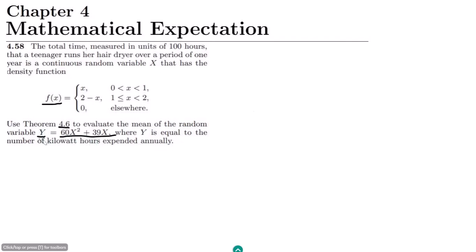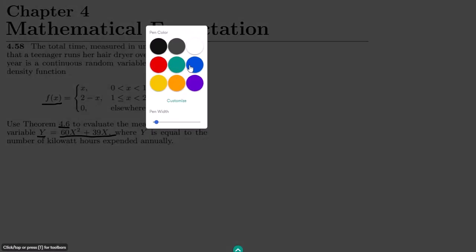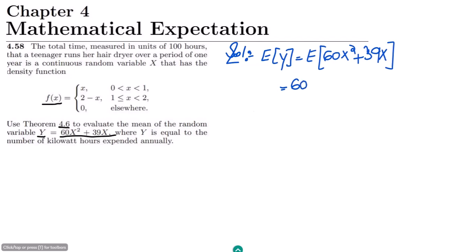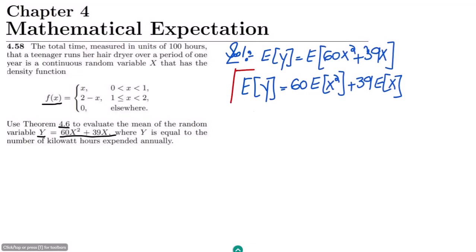To find the expected value of y, we apply linearity of expectation to E[60x² + 39x], which gives us 60·E[x²] + 39·E[x]. This is the formula we will utilize here.